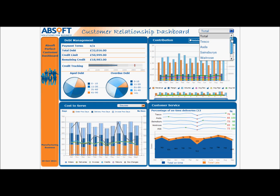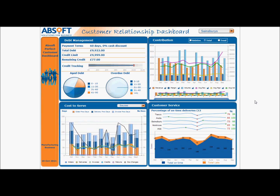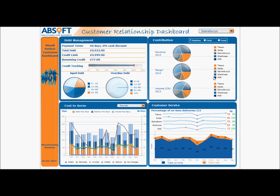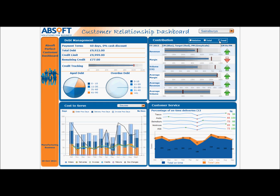If we filter again on specific customers then we can see individual performance. We can filter the graph by using this control here to focus on specific months. We can also filter the graph to look at specific measures, so we can remove detail from the graph that we're not interested in for this specific analysis. We can look at relative contributions across the year against three measures, for instance showing that ALDI has contributed the greatest revenue for the smallest volume in cases. We can also view the trends in the individual measures across the periods along with target information and a trend indicator on the previous period.